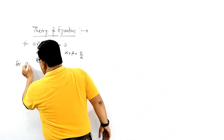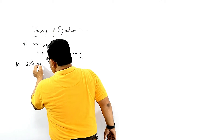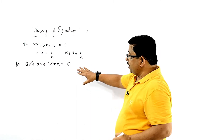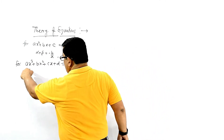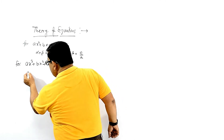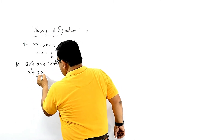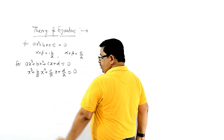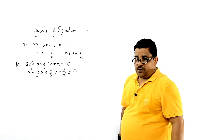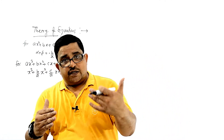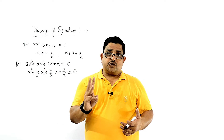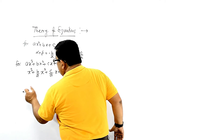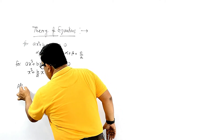For the cubic equation ax³ + bx² + cx + d = 0, if it is a cubic equation it will have three roots: alpha, beta, and gamma. So if alpha, beta, gamma are the roots, this equation can also be written in factored form.